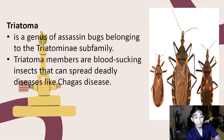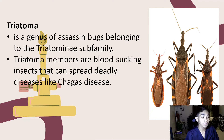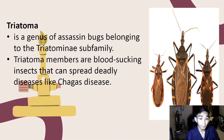There is also another species called Triatoma. Triatoma is a genus of assassin bugs belonging to the Triatominae subfamily. Triatoma members are blood-sucking insects that can spread deadly diseases like Chagas disease. Chagas disease is a tropical parasitic disease commonly known as American trypanosomiasis, caused by Trypanosoma cruzi.